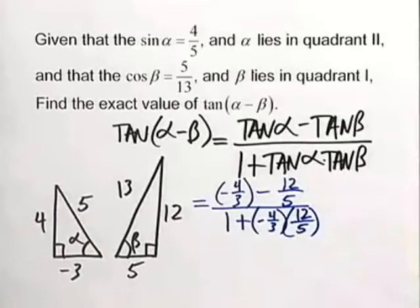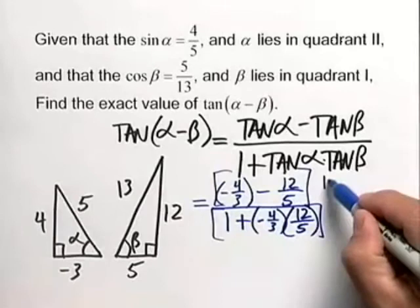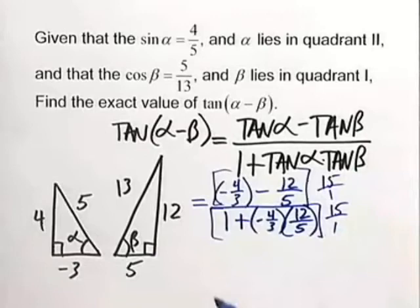Now we've got to simplify. The best way to do that is to multiply top and bottom of this mess by the LCD, which in this case is fifteen. A good hint is to write that as fifteen over one. When we do this, it takes some doing, but we can do it.